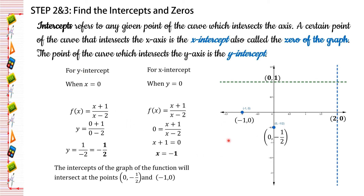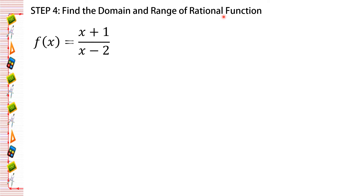At this point we can imagine what our graph looks like. The next step is to find the domain and range of the rational function. We write the given function f of x equals x plus 1 over x minus 2, and find the domain first by equating the denominator to 0. We get x minus 2 equals 0, so x equals 2.